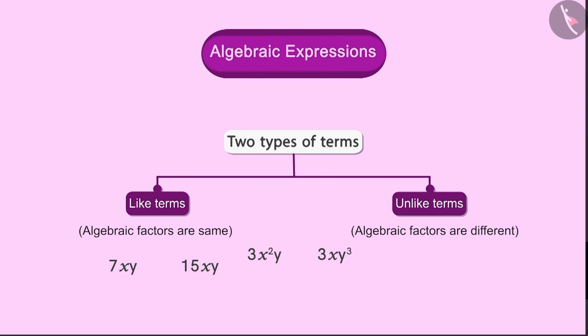But what about these terms? Are they like terms or unlike terms? In both the terms there are the same variables, x and y, but in 3x²y, x, x, y are the algebraic factors, and in 3xy³, x, y, y, y are the algebraic factors. Hence these two are unlike terms as they have different algebraic factors.